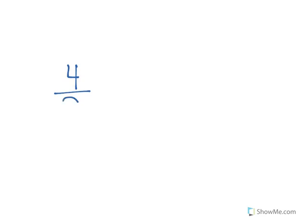When multiplying fractions, I can make it easier by simplifying within the problem instead of at the end. So if I had four-ninths times 27/48, I could multiply four times 27 and nine times 48 and then simplify, but I can also simplify before I do the multiplication — which just means dividing the numerator and denominator by the same thing.